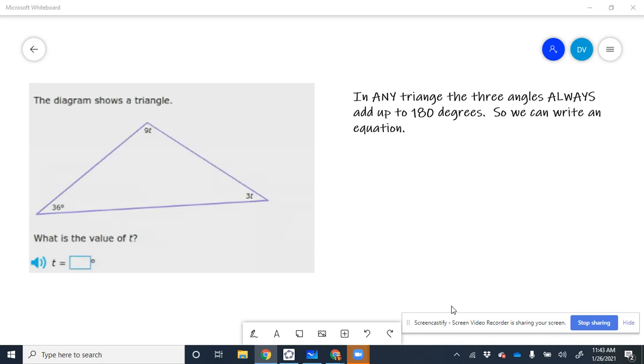So this problem has another triangle, and like I have on the notes here, any triangle, in any triangle, all three angles will always add up to 360 degrees. And we can write an equation that says what I just said.